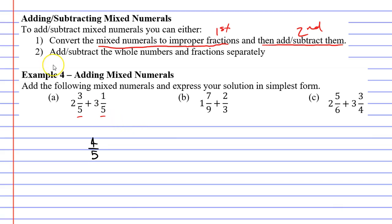Now we need to add up our whole numbers. Our whole numbers are two and three. Two plus three makes five. That was a nice simple example — we get the solution five and four-fifths.